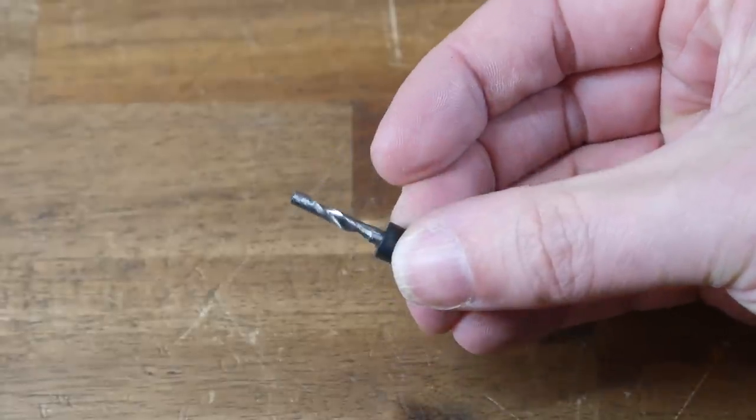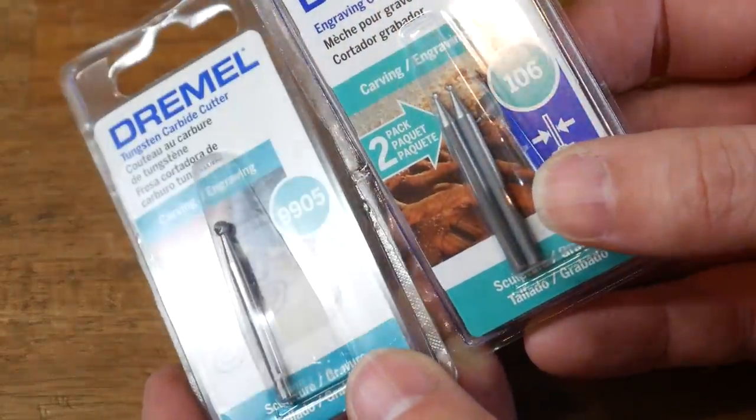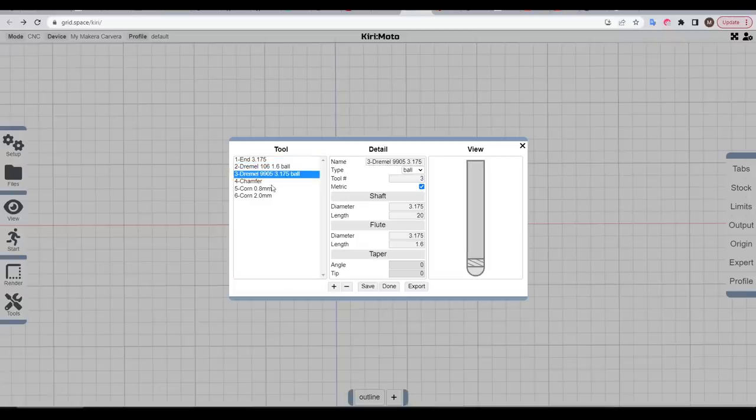I already had plenty of flat end mills, so to supplement this, I purchased some Dremel tungsten carbide ball ended engraving bits. I picked up some dimensions for these from the Dremel website, and then entered these as new tools in my free CAM software Kiri:Moto.